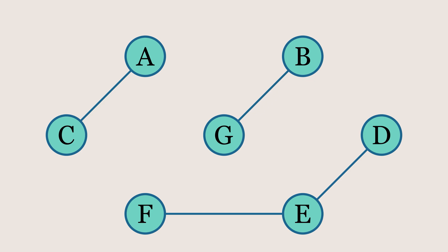Next is the concept of connected graphs. A graph is called connected when every node is reachable from every other node. In a connected graph, there are no isolated nodes, and all nodes are part of a single connected component. In this example, the graph is not connected, so we need to add edges between certain nodes so that every node can reach every other node.